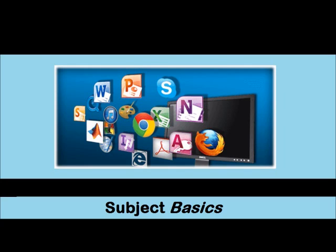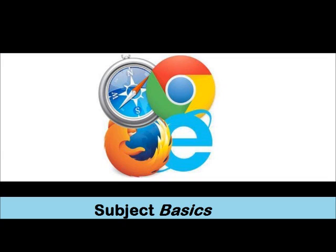Programming software, system software, and application software. One of the most popular application software programs used today is the internet browser. Yes, your internet browser is a type of software. I'm sure you've seen the icon appearing on your screen. Well, these icons, often displayed as shortcuts on the desktop of your computer screen, are representative of application software and the various browsers that allow you to access the internet.